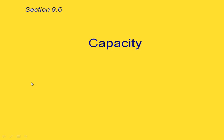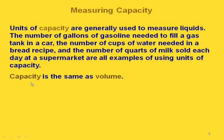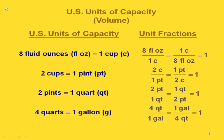This is section 9.6 about capacity. When we talk about units of capacity, these are generally used to measure liquids. For example, the number of gallons of gasoline, number of cups of water needed in a recipe, and the number of quarts of milk sold each day at a supermarket. These are all examples of using units of capacity. Capacity is the same as volume — we usually use the word volume instead of capacity. Here are some U.S. units of volume or capacity.